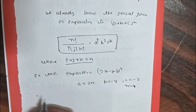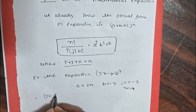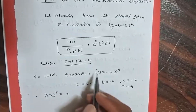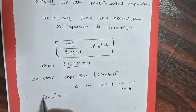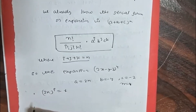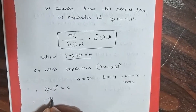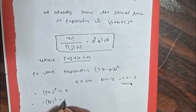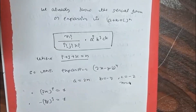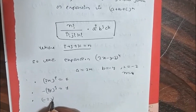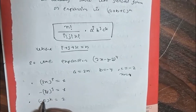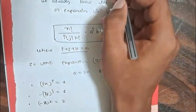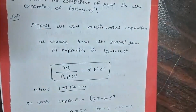Now we find i, j, and k. The power of x is i = 1, the power of y is j = 1, and the power of z is k = 2.